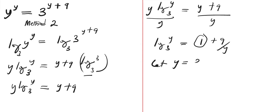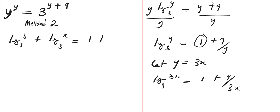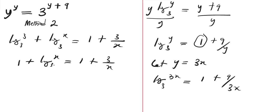Let y equal to 3x. By doing so we are going to have log of 3x to base 3 equals to 1 plus 9 over 3x. Expanding the left side: log of 3 to base 3 plus log of x to base 3 equals to 1 plus 3 over x, since 9 divided by 3 is 3. Since log of 3 to base 3 is 1, we have 1 plus log of x to base 3 equals to 1 plus 3 over x, and the 1s cancel, giving log of x to base 3 equals to 3 over x.